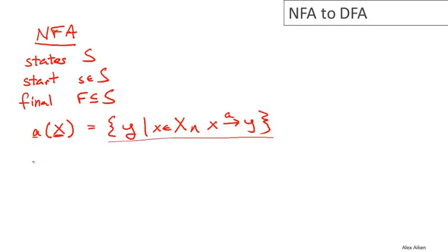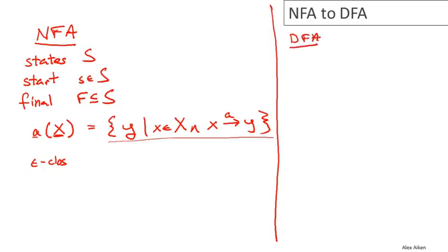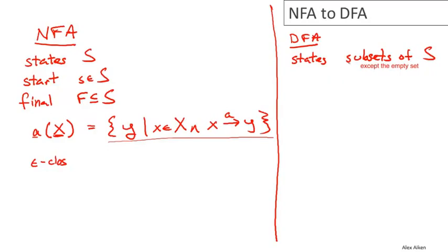The other operation we need is the epsilon closure operation, abbreviated epsilon-CLOS. Now we're ready to define our DFA. The DFA needs a set of states, a start state, a set of final states, and a transition function. The states of the DFA will be the subsets of S — so there will be one state of the DFA for each possible subset of states of the NFA. This is potentially a very big number, but it's still finite, and so we can use that set of subsets as the state space of the deterministic machine.